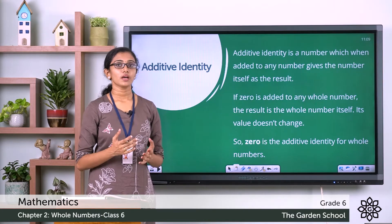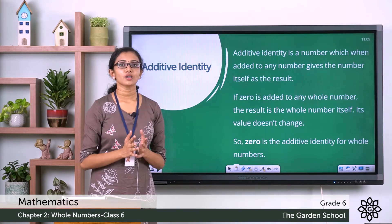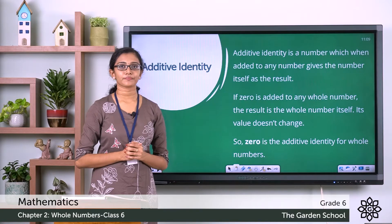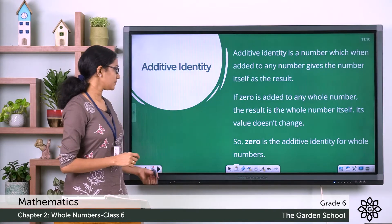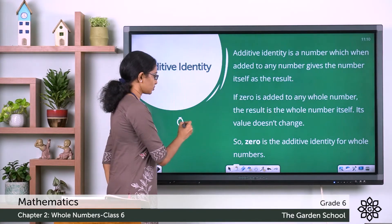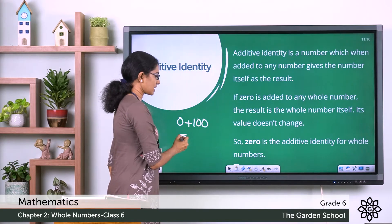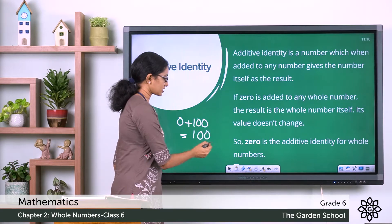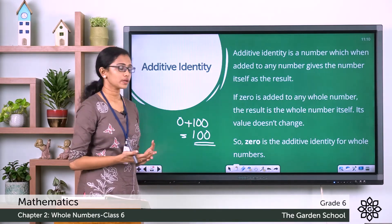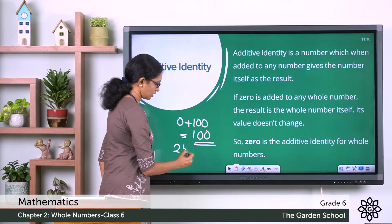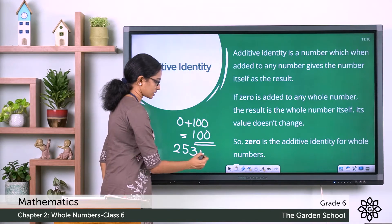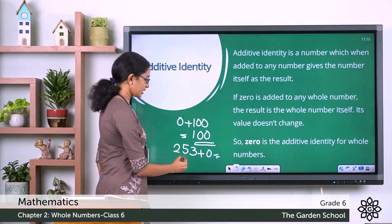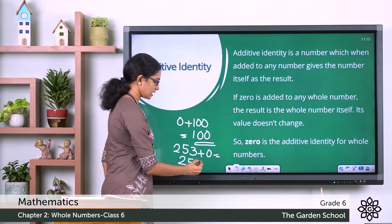What can be added to a given number to get that number itself as the result? We know zero can be added to any number and you get that number itself as the sum. For example, if you add 0 to 100, the answer is 100 itself. And 253 plus 0 — you are adding 0 to a given number and you get the number itself as the end result.